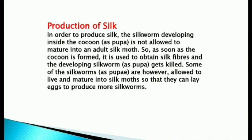What is the production of silk? In order to produce silk, the silkworm developing inside the cocoon as pupa is not allowed to mature into an adult silk moth. So, as soon as the cocoon is formed, it is used to obtain silk fibers. Some of the silkworms as pupae are however allowed to live and mature into silk moths, so that they can lay eggs to produce more silkworms.